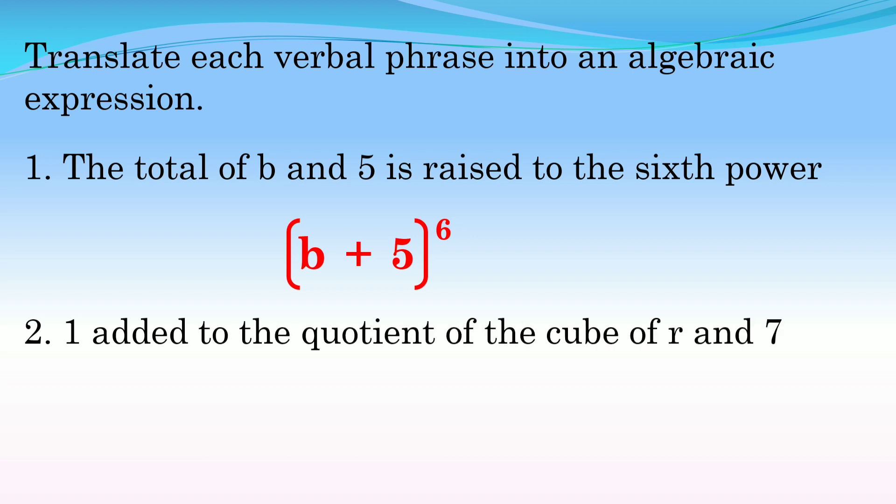Number two: One added to the quotient of the cube of r and 7. We have the keyword 'added' which is addition, so one. Then 'quotient' means division, so we put a line. 'The cube of r' - cube means exponent, so r raised to 3. And 7. The quotient of the cube of r and 7. So the answer for number two is: 1 + (r³/7).